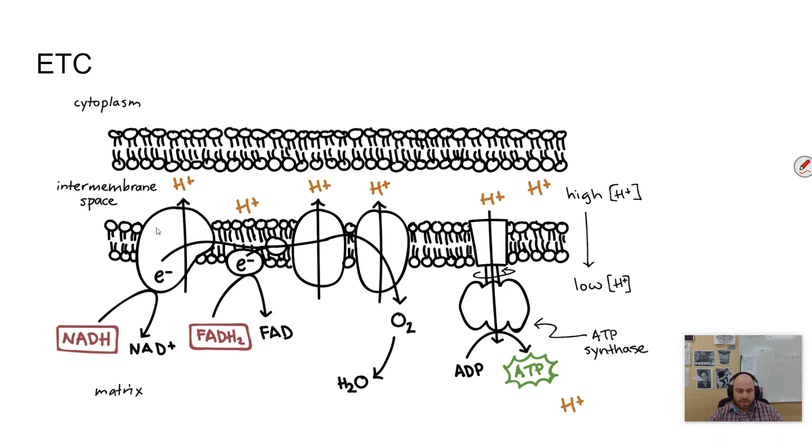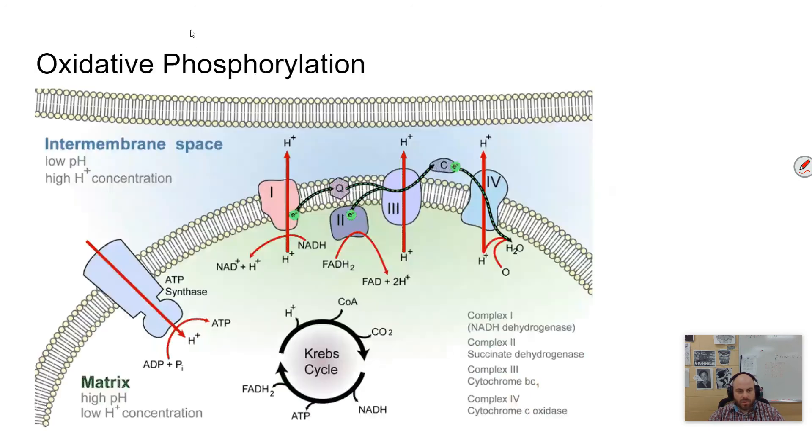This process is what is called a conserved process. A conserved process basically means that this is something that occurs in all organisms. All organisms have this process in similarity. NADH and FADH2 here are our electron carriers. Not sure if I mentioned that, so that's important. We'll mention those more later.